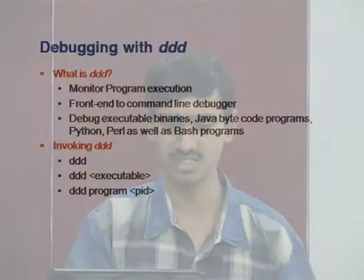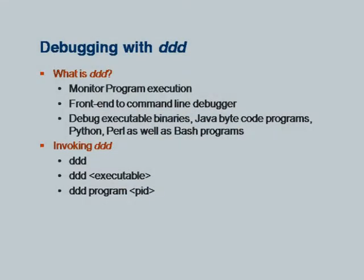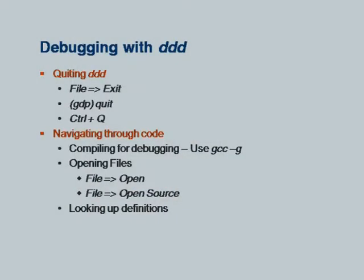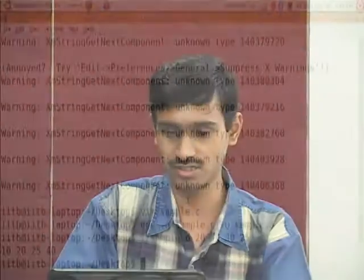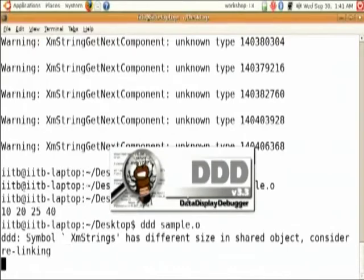We will quickly go through some additional things we can do with DDD. As we have seen for invoking, you can just type 'ddd' and open your file later. The other way we used is 'ddd executable'. You can also attach DDD to a running program by specifying its process ID — the syntax is 'ddd program PID'.